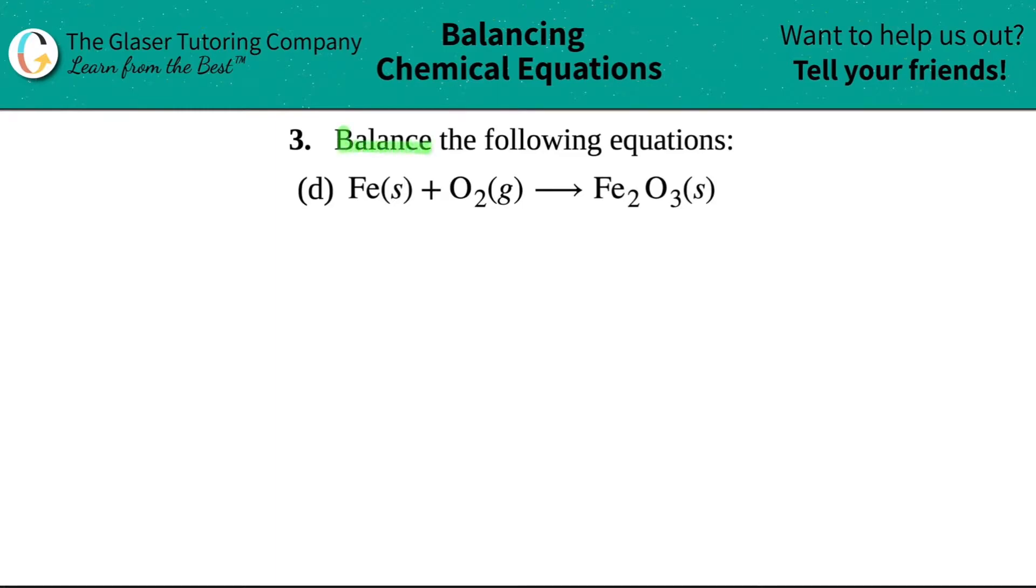Number three, balance the following equations. And then I have one equation here, which is letter D. I have Fe solid plus O2 gas yields, or arrow sign, Fe2O3 solid.